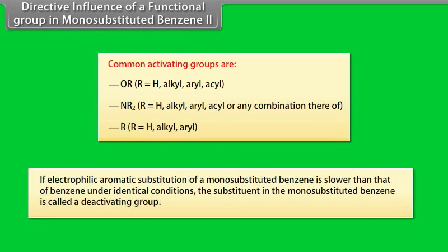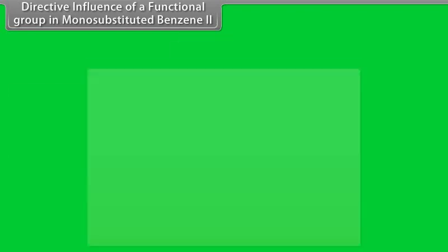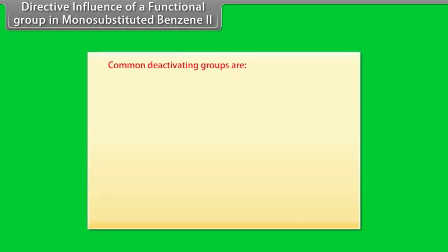If electrophilic aromatic substitution of a monosubstituted benzene is slower than that of benzene under identical conditions, the substituent in the monosubstituted benzene is called a deactivating group. Under identical conditions, reaction 2 is slower than reaction 1. Thus, the nitro group is a deactivating group. All deactivating groups are electron withdrawing groups. Common deactivating groups are...